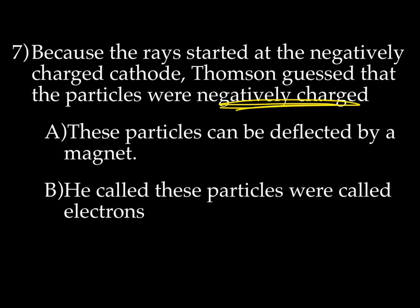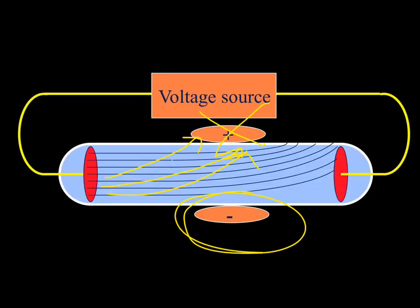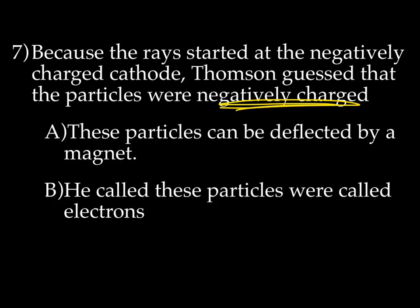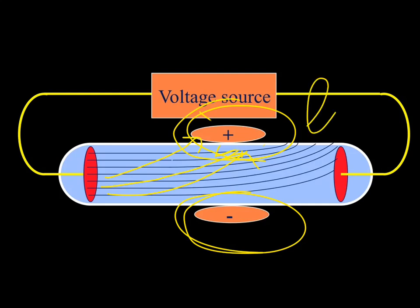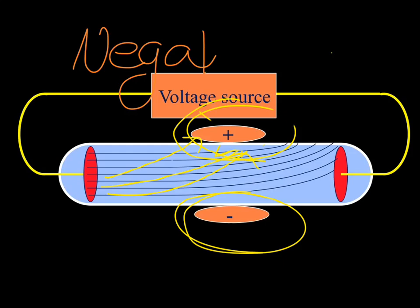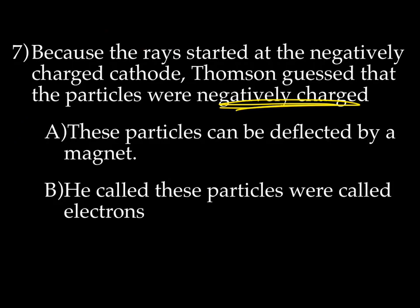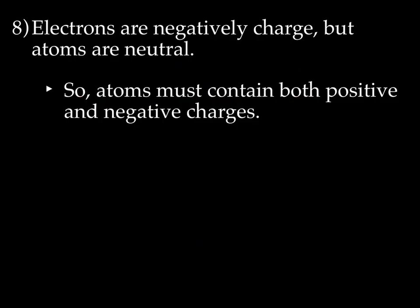Because the rays started at the negatively charged cathode, Thomson guessed the particles were negatively charged. These particles were deflected by a magnet. They went towards the positive part of the magnet, away from the negative part of the magnet. That means he thinks these particles are negatively charged, and he called these particles electrons. I'm guessing the reason they called them electrons is because he was studying electricity.